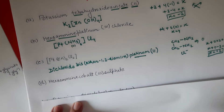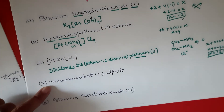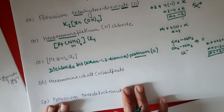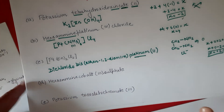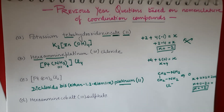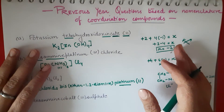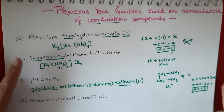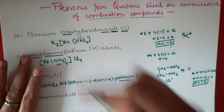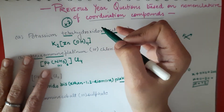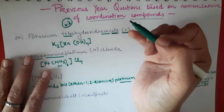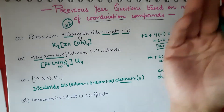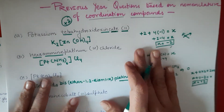If you understood this, you can also write the names of the remaining two questions very easily. You have to comment the formula of hexaaminecobalt sulfate and potassium trioxalatochromate(III) — comment your answers to these two questions. Practice all questions in NCERT — in-text and solved exercise questions. If you go through all of them without any confusion, you are going to score 2 marks from here very easily, because since 2012-2013 there have been 2 marks on this nomenclature part.